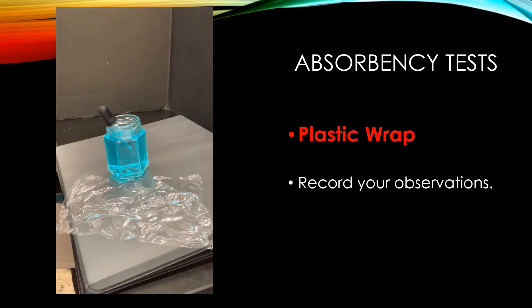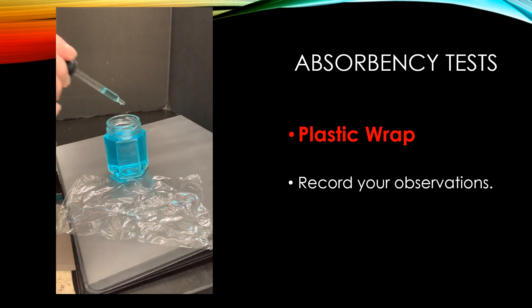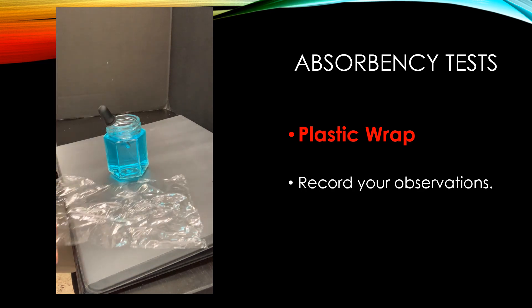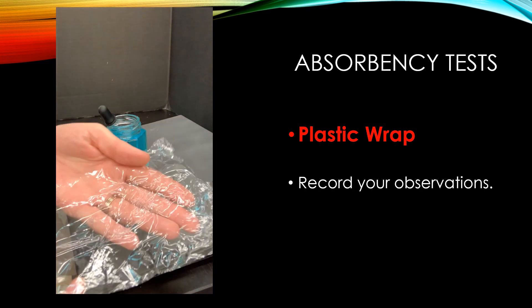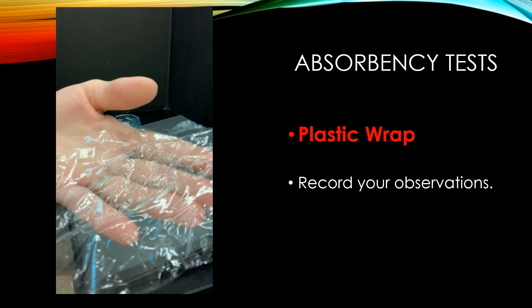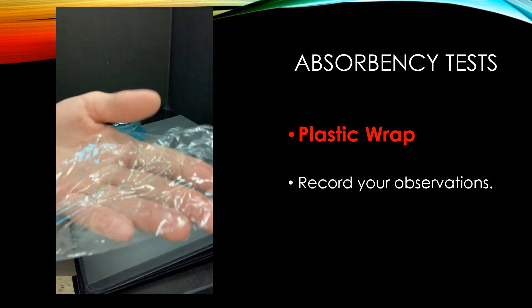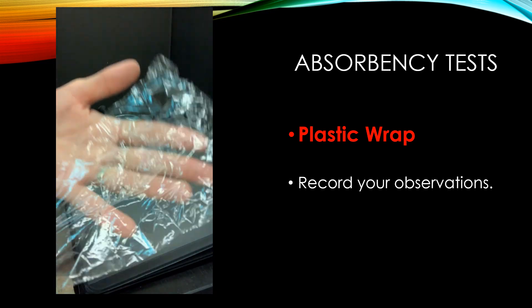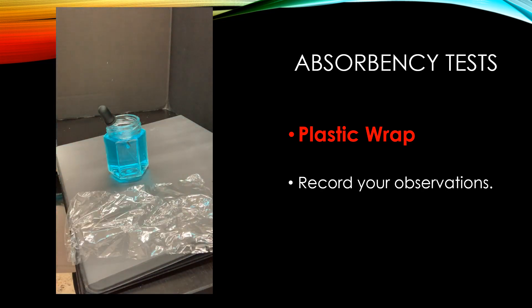The plastic wrap is the next one we're going to test. Let's put one, two, three drops on it. You could even see the water bounce up off of it. And you can see the water is like rolling around on it. It's not being absorbed at all. They just rolled off the plastic, not being absorbed at all. So I would say the plastic has repelled it.